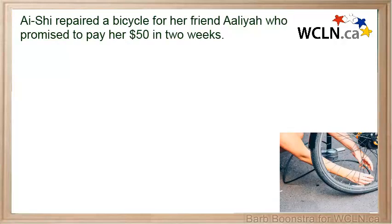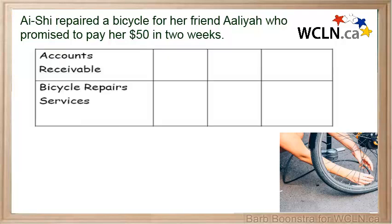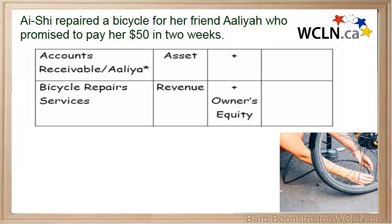Ashi repaired a bicycle for her friend Aaliyah, who promised to pay her $50 in two weeks. The two accounts affected would be Accounts Receivable and Bicycle Repair Services. Accounts Receivable is labeled so that you can remember who owes you the money. Accounts Receivable is an asset account and Bicycle Repair Services is a revenue account. The asset is increasing and the revenue account is increasing.